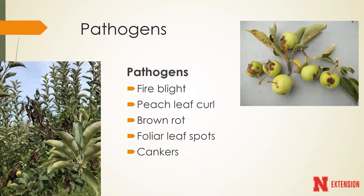The main pathogens I think about controlling during the dormant season: fire blight is a big one - of all the fruit questions I get, fire blight is by far number one. Our leaf curls are very well controlled through dormant season sprays. Brown rot and canker management are also best done during the dormant season. When those leaves aren't on the tree, we're able to see a lot more and can identify these things quite a bit better.